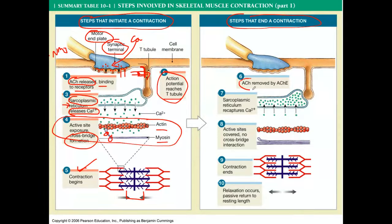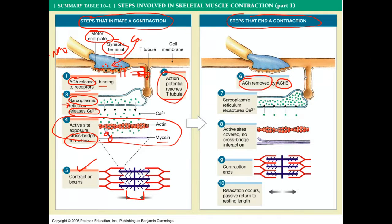To end the contraction, we just remove the neurotransmitter. Acetylcholine is broken down by acetylcholinesterase, an enzyme that breaks down acetylcholine. With no more acetylcholine there's no more excitation, so the calcium is recaptured back into the sarcoplasmic reticulum. With no more calcium, troponin and tropomyosin return to their normal resting positions, the contraction ends, and you get relaxation.